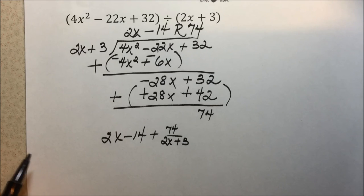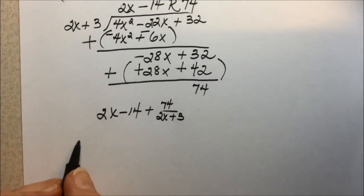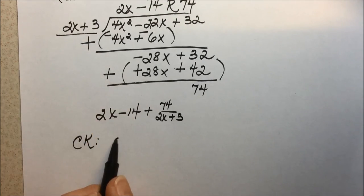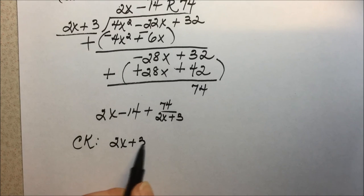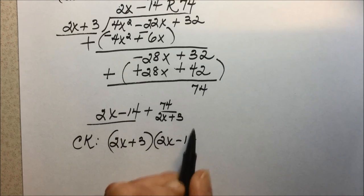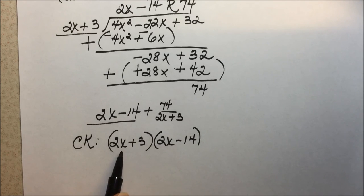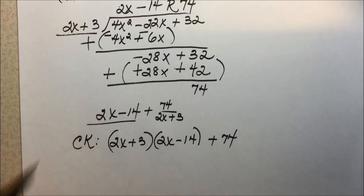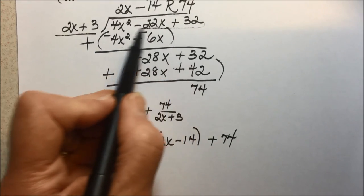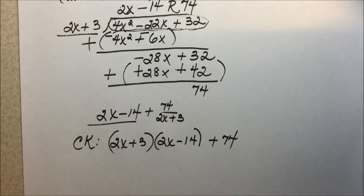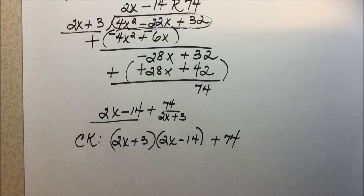To check a division problem, you multiply. And the check here would be to take our divisor, 2x plus 3, multiply it by our quotient, 2x minus 14, multiply those two binomials, and then add your remainder and see that it does end up giving you this as your solution. Then you'd have verification that you have properly divided the polynomials.